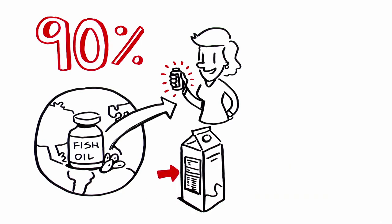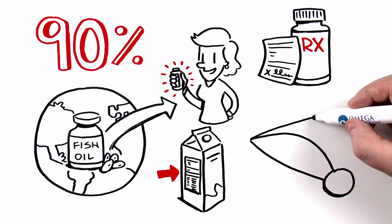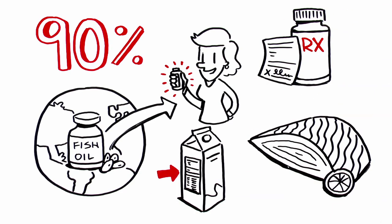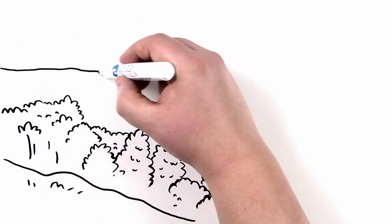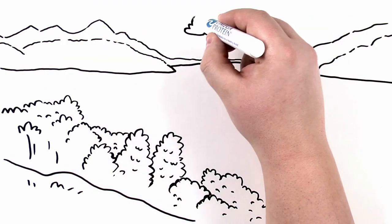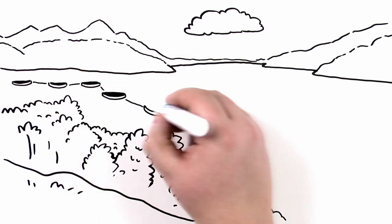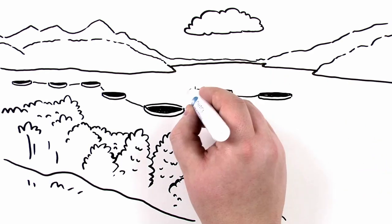As global aquaculture production continues to grow and the supply of fish meal and oil remains constant, technological innovations have led to increasingly efficient uses of meal and oil in aqua-feeds.